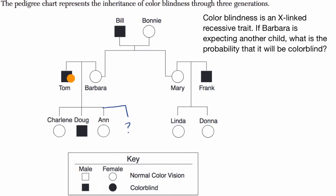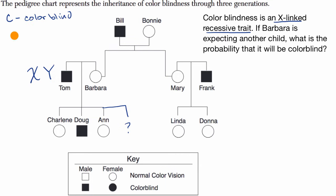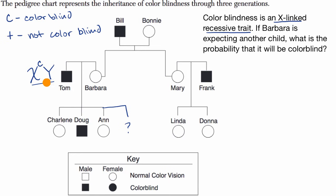Tom is pretty straightforward — he is male, so he has an X chromosome and a Y chromosome. Colorblindness is an X-linked recessive trait. I'll use lowercase c for colorblind and a plus sign for not colorblind. Tom's phenotype is colorblind, and since he only has one X chromosome, that X must carry the recessive allele. So Tom's genotype is X^c Y.